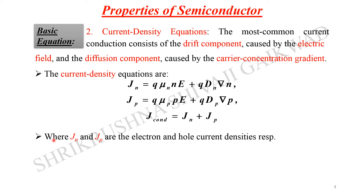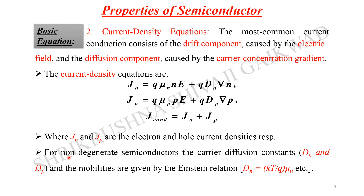For a non-degenerate semiconductor, the carrier diffusion components D_n and D_p, and the mobilities, are related by the Einstein relation: D_n = (kT/q) × mu_n. Here D_n and D_p are the diffusivities for electrons and holes respectively, k is Boltzmann's constant, T is temperature, and q is the elementary charge.